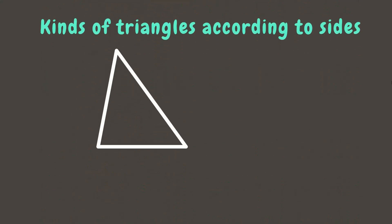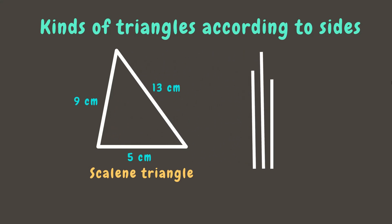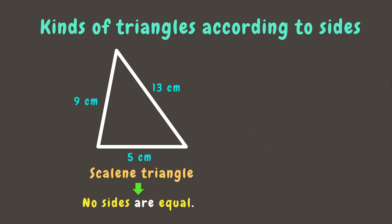Last one. This triangle is an example of a scalene triangle. You can notice that each side has a different length, meaning that in a scalene triangle, no sides are equal. For example, in this triangle one side measures 9 centimeters, another is 13 centimeters, and the last one is 5 centimeters. Another example: one side is 11 meters, another is 15 meters, and the other side is 8 meters — no sides are equal. We can also use tick mark symbols; all sides have different symbols, showing they are not equal.